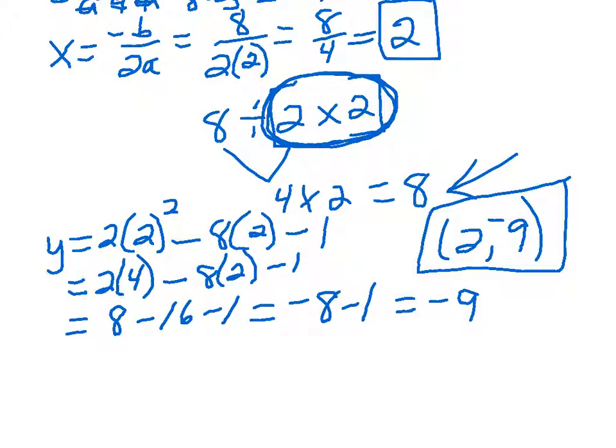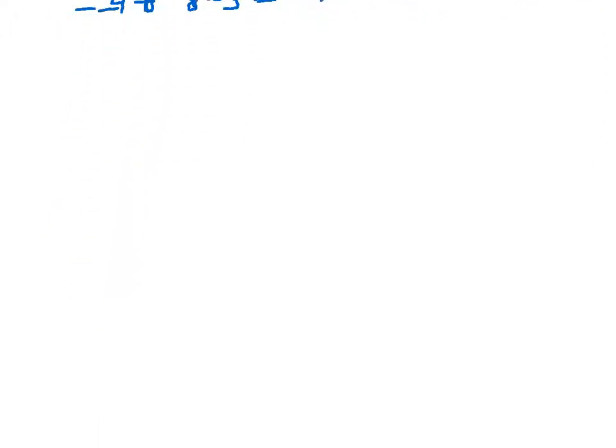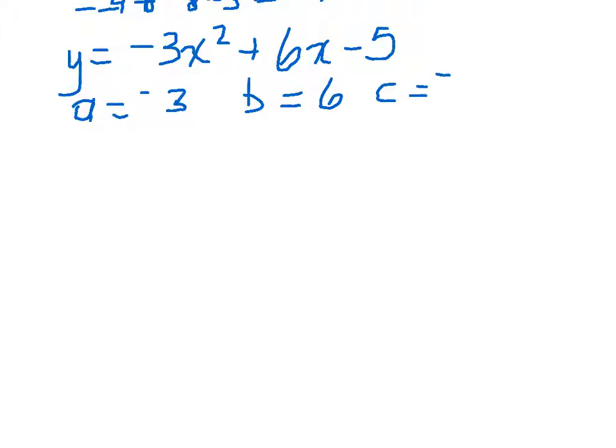Alright, let's try one more. This is the one where if you haven't done this already and you're feeling confident, I want you to write down the problem, hit the pause button, work it out, and then hit play and see if you get the same thing. Okay, this time our equation is going to be y equals negative 3x squared plus 6x minus 5. If you want to hit the pause button, go ahead. So a equals negative 3, b equals 6, c equals negative 5.